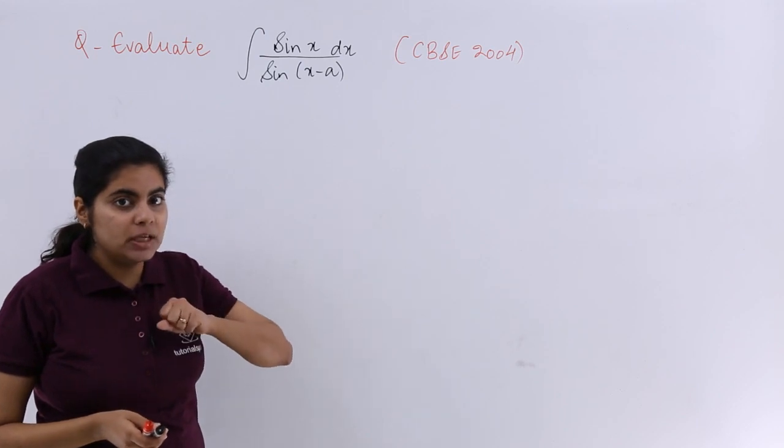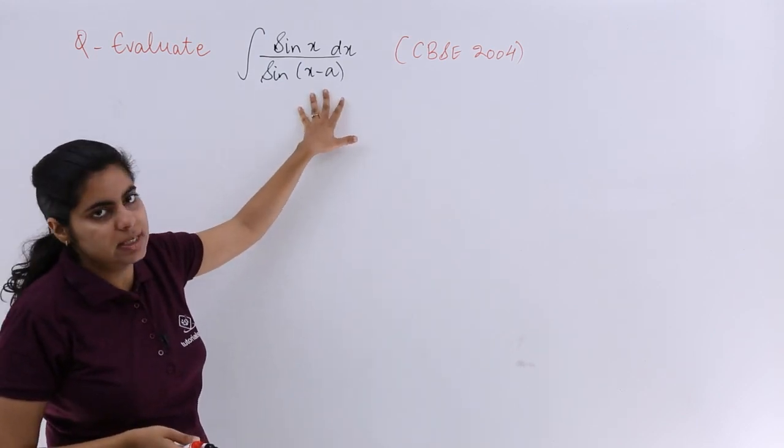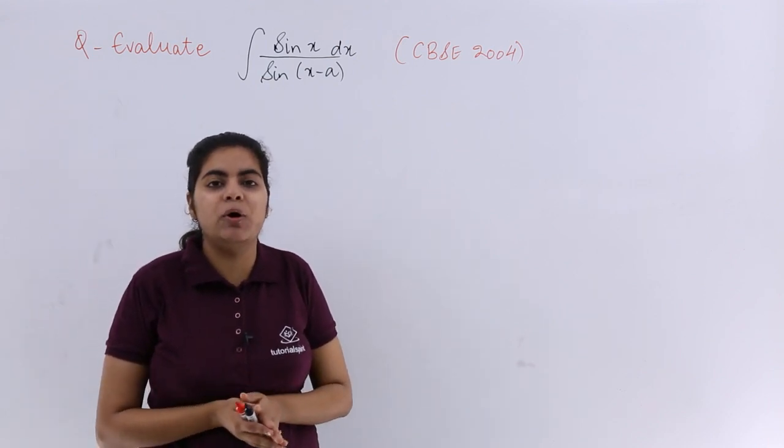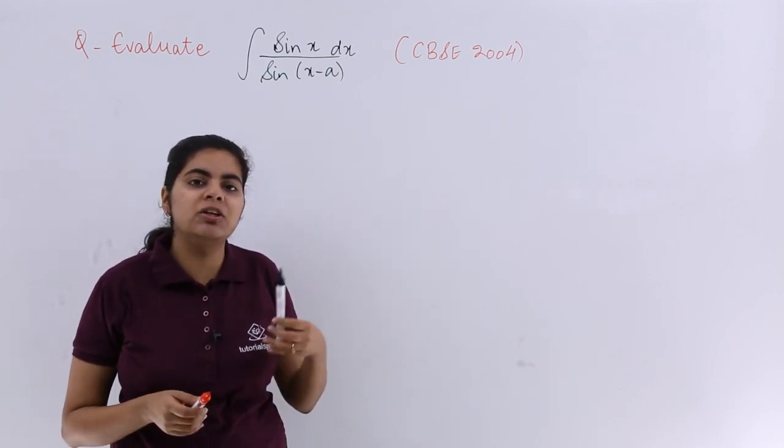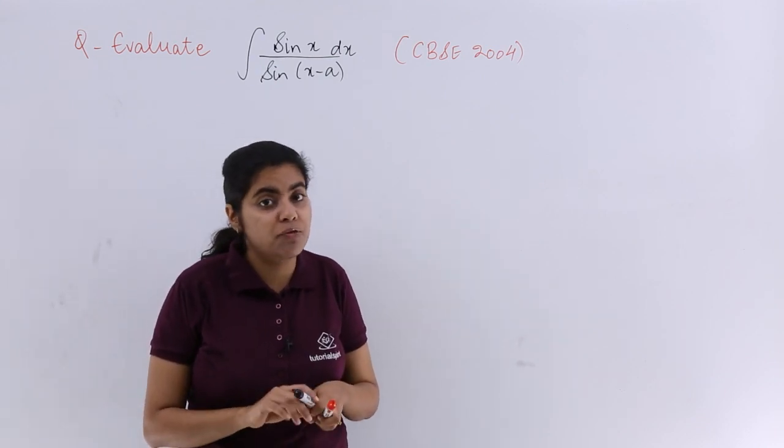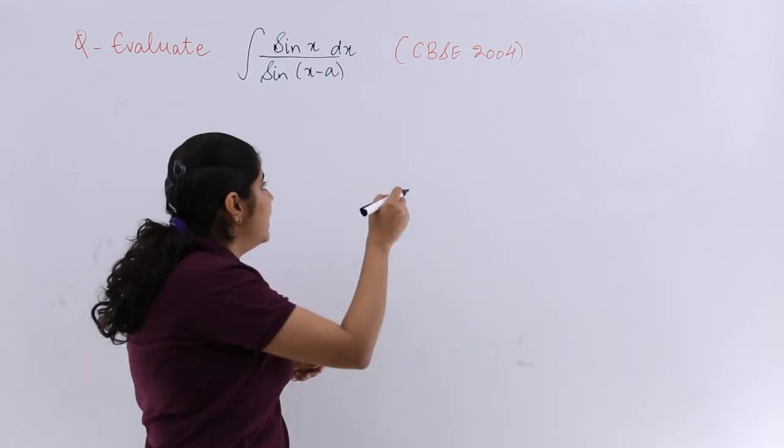Now see in the denominator what do we have? x minus a. In the numerator we have only x. I have already told you about manipulation - we need to manipulate the numerator according to the denominator. So how can we do it without affecting the question? Let's see.